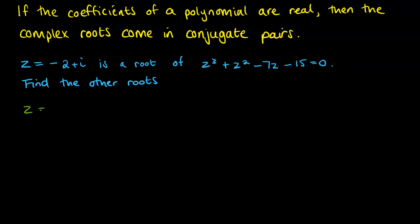So if z is minus 2 plus i, its complex conjugate will also be a second root. Because all of the coefficients of this equation here are real numbers. So we can straight away write down the second root as being minus 2 minus i. Because it's the conjugate of the root we already know.